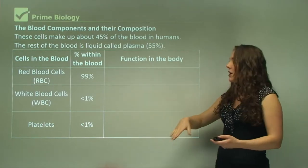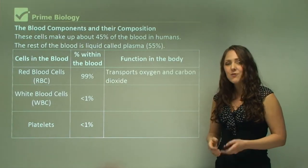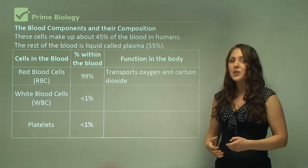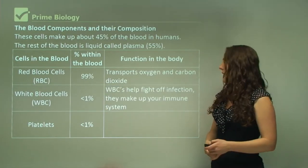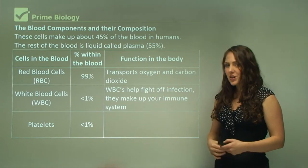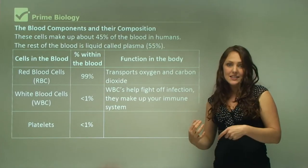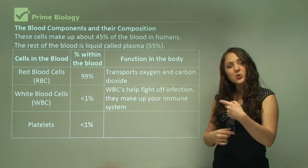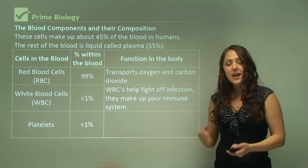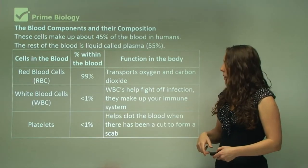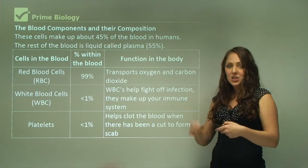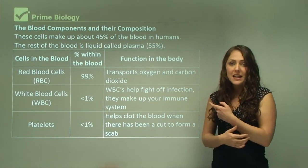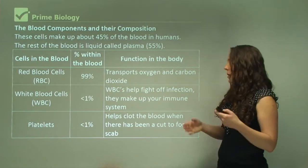You need to know these three terms. Red blood cells function to transport oxygen and carbon dioxide around the body. White blood cells protect the body by fighting off infection and making up the immune system — they create memory cells that remember a disease so you shouldn't catch it more than once. Platelets help your blood to clot when you've been cut or your skin has been opened and blood is released, which is why platelets make up less than 1%.